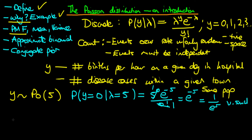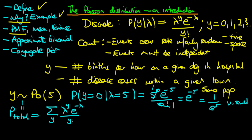We can also verify that the Poisson distribution is a proper probability distribution. One requirement is that the sum of all probabilities across all counts must equal one. So if we sum lambda to the power y times e to the power minus lambda divided by y factorial over all non-negative integer values of y, we need to get one. To prove this, we can take e to the power minus lambda outside the summation, since it has no y in it.